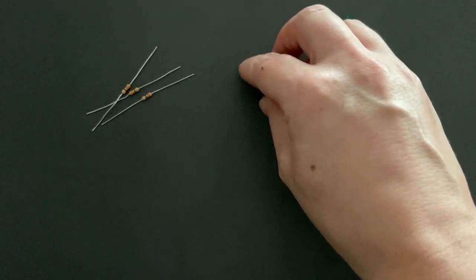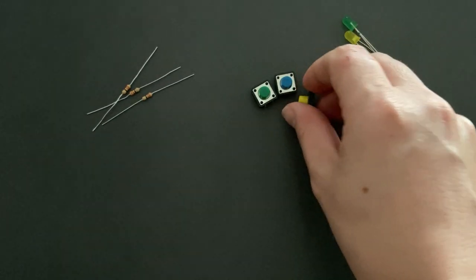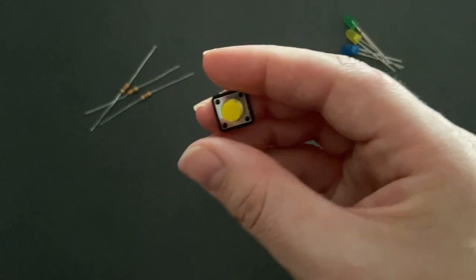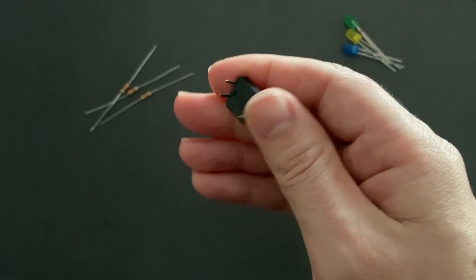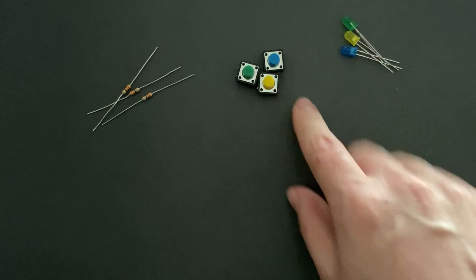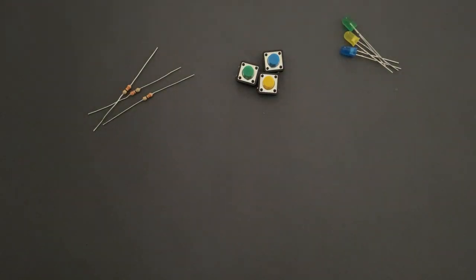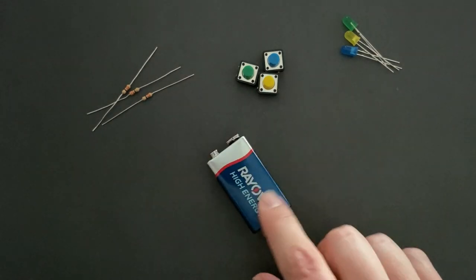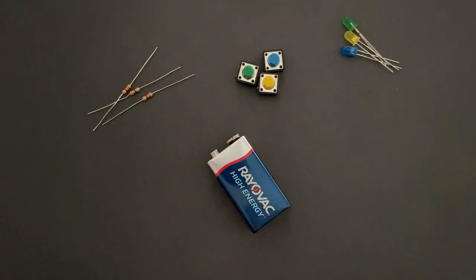3 push buttons. A switch is a component which controls the openness or closeness of an electric circuit. They allow control over current flow in a circuit. Switches are critical components in any circuit which requires user interaction or control. This one you might be more familiar with. A 9-volt battery. And also, a snap connector.